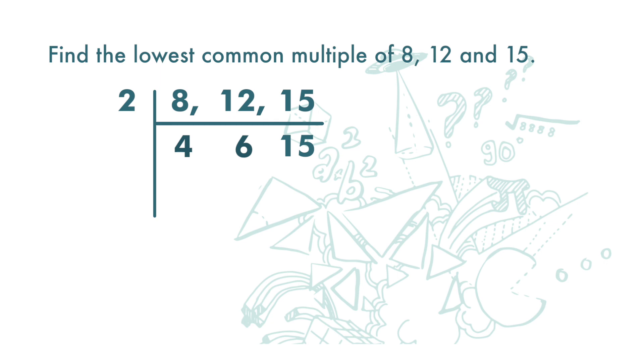For the next row of numbers, 4 and 6 can be divided by 2, or 6 and 15 can be divided by 3. We can use either 2 or 3. Let's say we use 3. 4 can't be divided by 3, so it's maintained and is written down here. 6 divided by 3 is 2. 15 divided by 3 is 5.